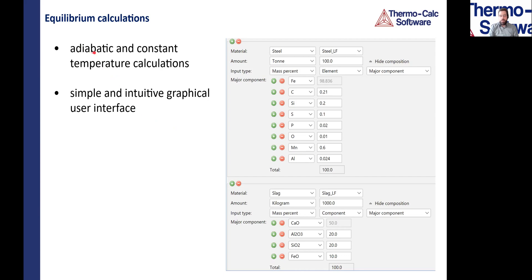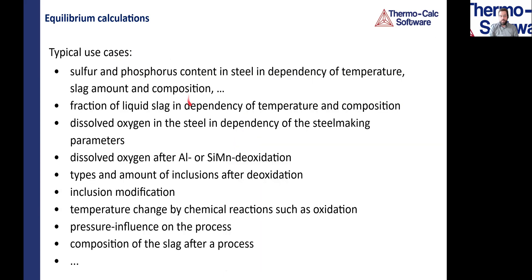You can do both adiabatic calculations — assuming no heat loss from the system — and constant temperature calculations. There are many applications where you can use pure equilibrium calculations. For example, you can calculate the sulfur and phosphorus content in steel as a function of temperature, slag amount, and composition. You can calculate the dissolved oxygen content in steel after deoxidation, calculate which inclusions are occurring, and how you can modify these inclusions.